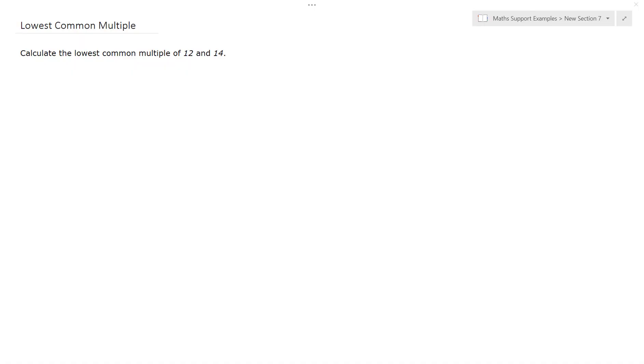For this example, we want to calculate the lowest common multiple of 12 and 14. To do this, I just need to list out the multiples of both 12 and 14, and see the smallest one which they have in common.